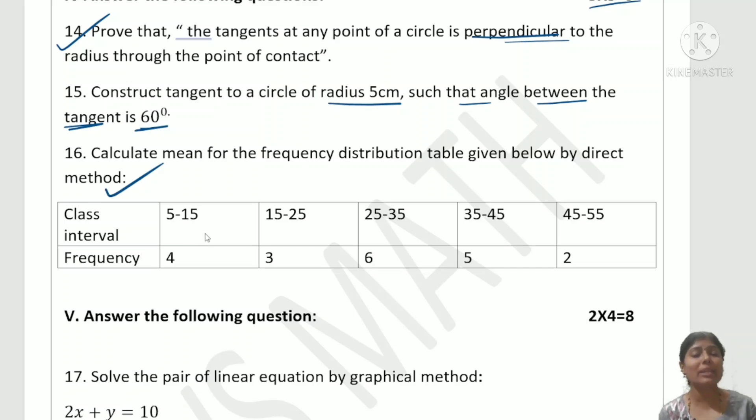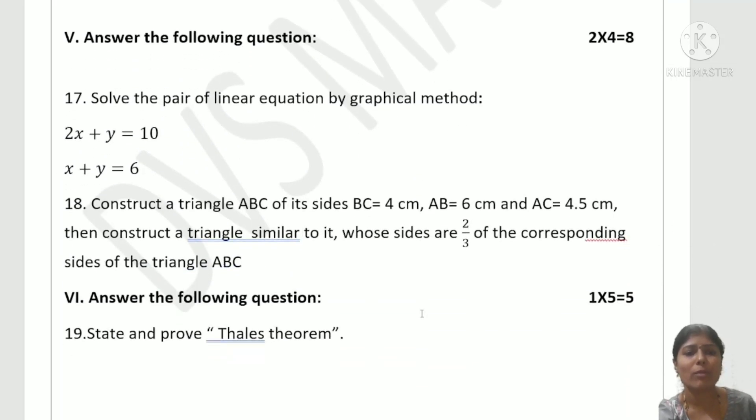For direct method, use the mean formula: sigma fx by sigma f. Find fx, then sigma fx, and express the values. Mark at least three values in the box. In construction, solve using the ratio. For 2:3, the greater number goes to the denominator.